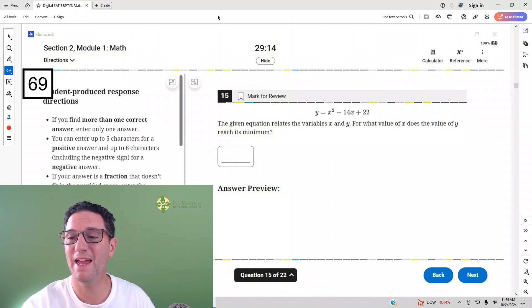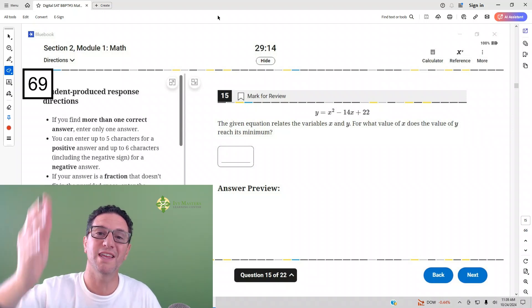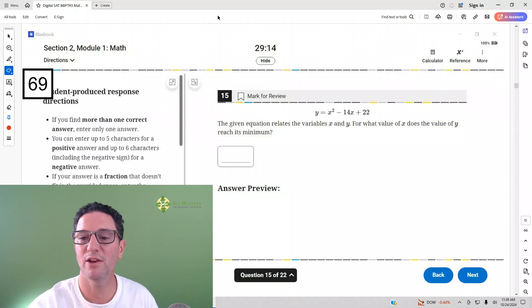Simply by hand, for what value of X, the value of X for which Y reaches the minimum is also known as the axis of symmetry. So you might know it by that name. And to get it, all you got to do is negative B over 2A.